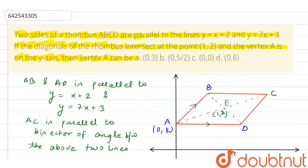(0, 5/2) or (0, 0). So option B and C both are the correct options here. And this is my final answer.